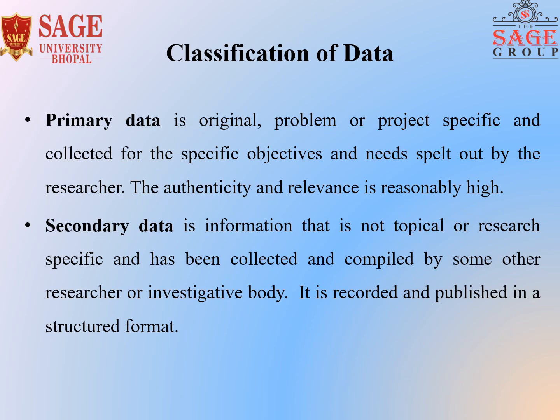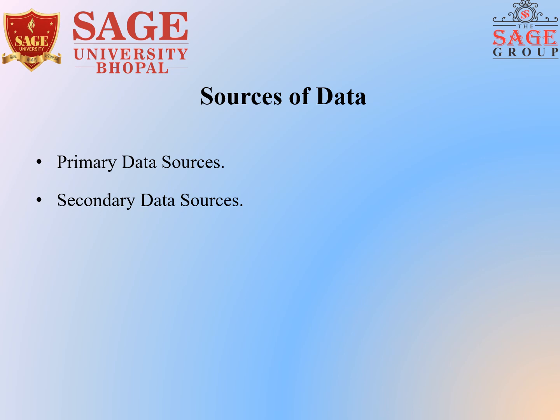Here is the classification of data. In research methodology, data is classified as primary and secondary data. Primary data is somewhat original and project-specific data collected for a specific objective. It is highly authentic and collected for the first time. Whereas secondary data is not tailor-made; it is collected by various means and published by government and non-government organizations. There are two sources of data: primary data source and secondary data source.